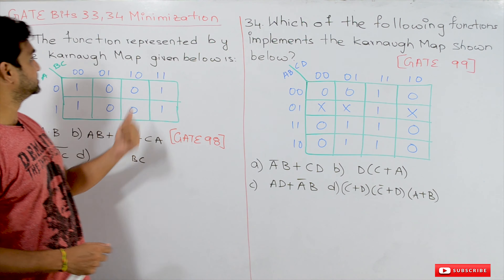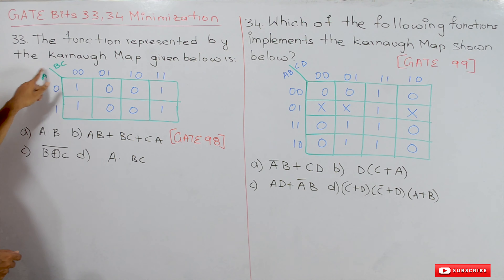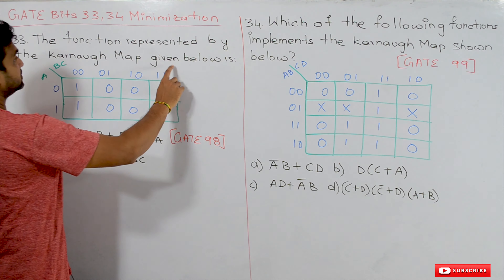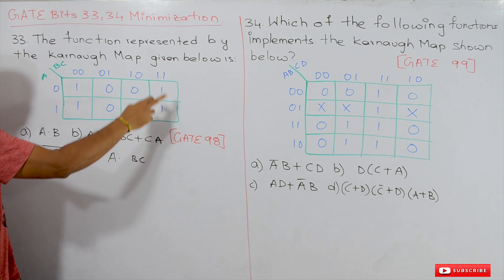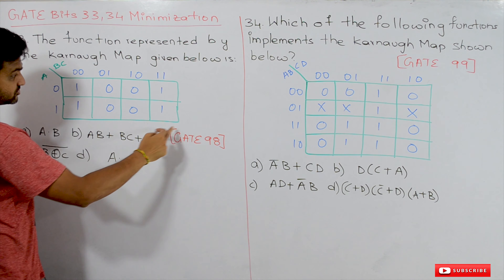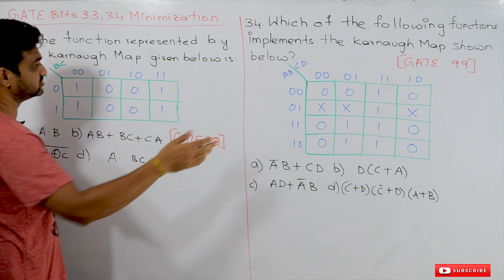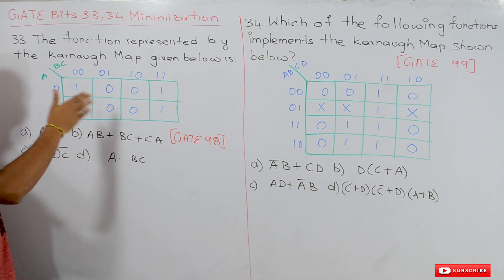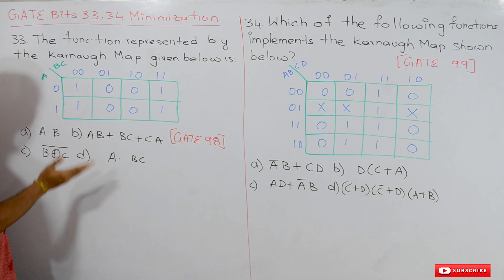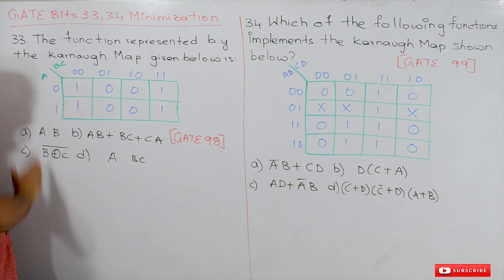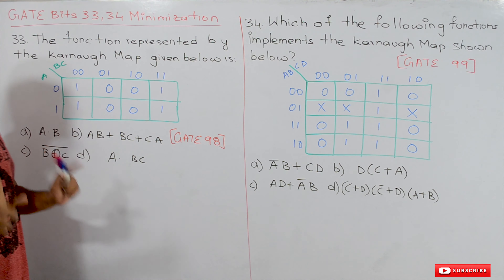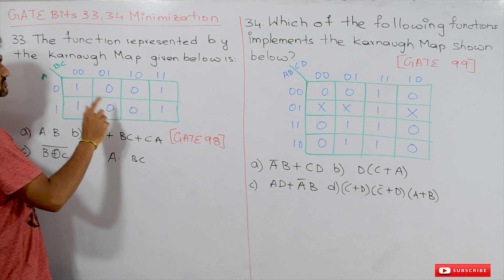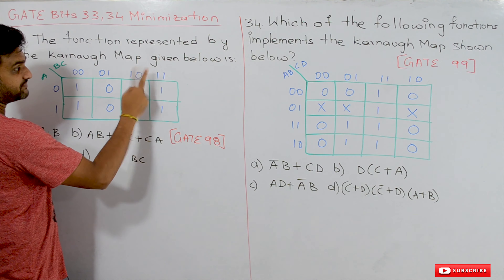Now coming to this class, we will try to solve these bits. The first question is: the function represented by the Karnaugh map given below — so what does this K-map produce? We have to find what function this K-map represents. We need to minimize this K-map, and please be very cautious about this question.